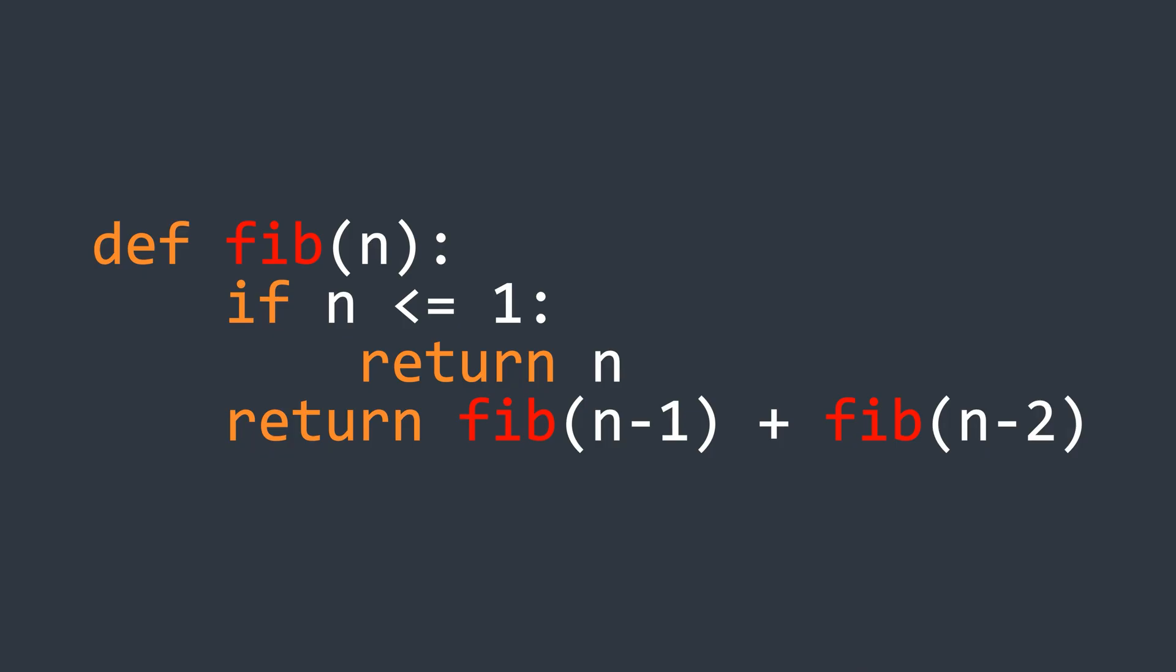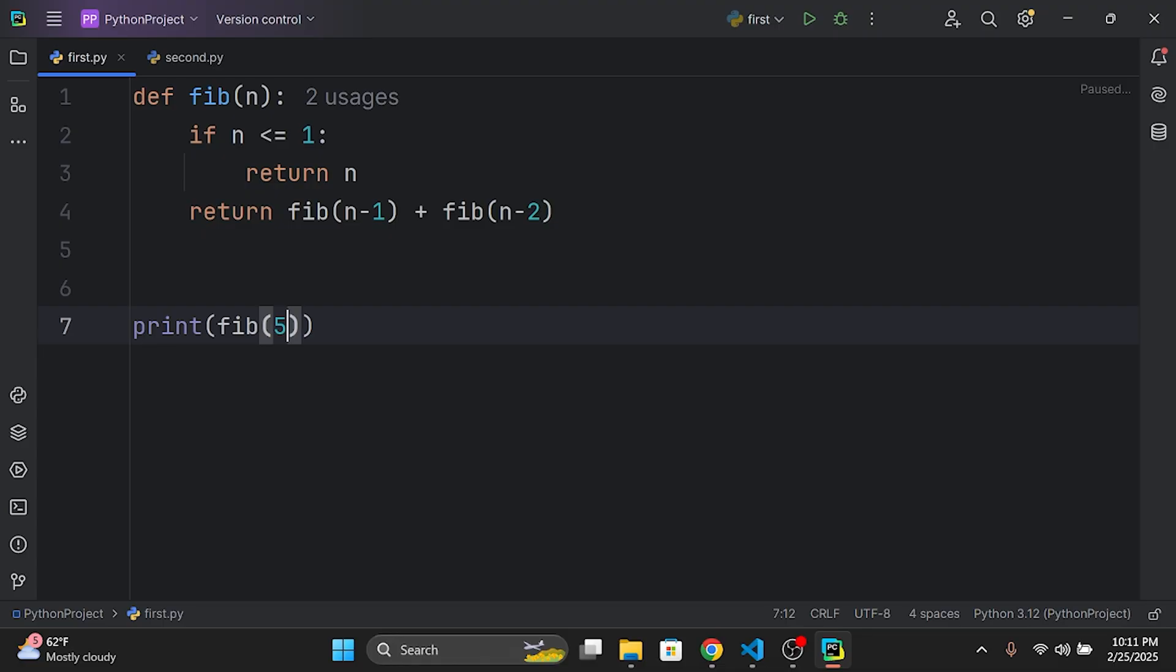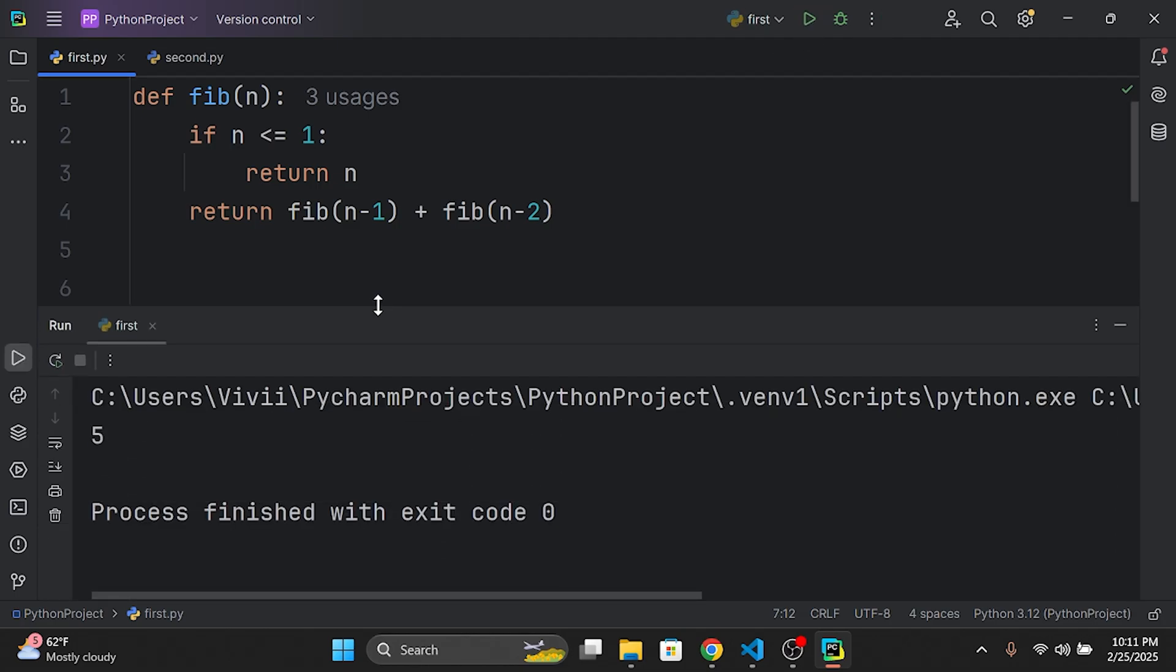And at first glance this seems to work fine. If we run the code for small values like n equals 5, it quickly gives the output.